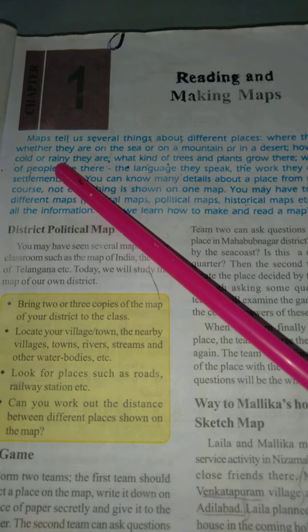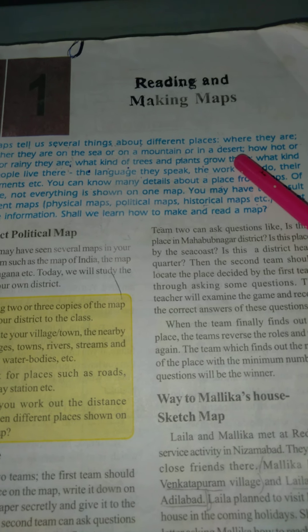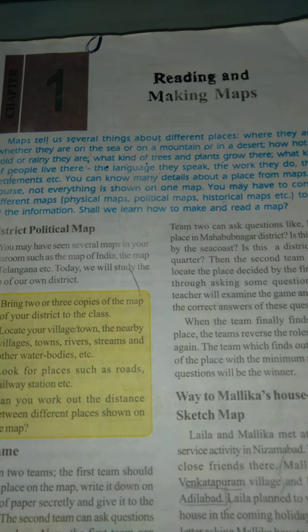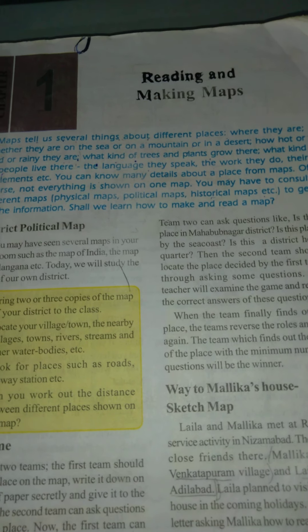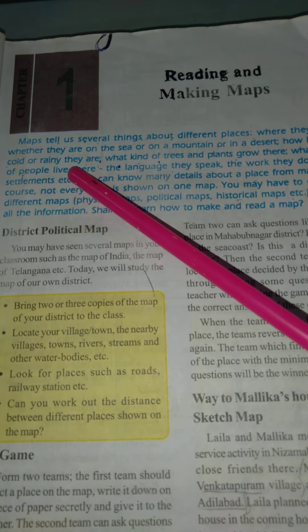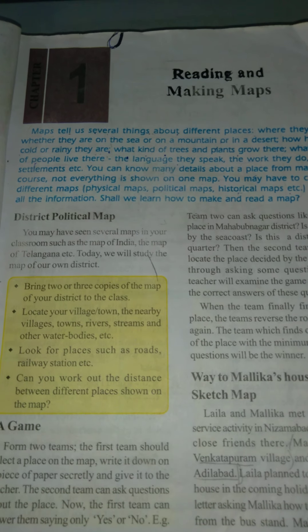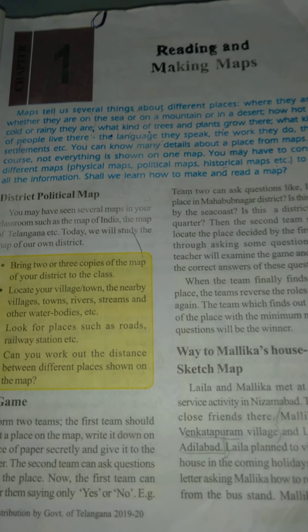Maps tell us several things about different places. We can identify different places — where they are, whether they are on the sea, or on the mountain, or in the desert. We can also see how hot or cold or rainy a place is — the season and climate of that area.